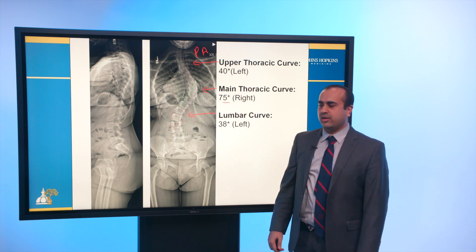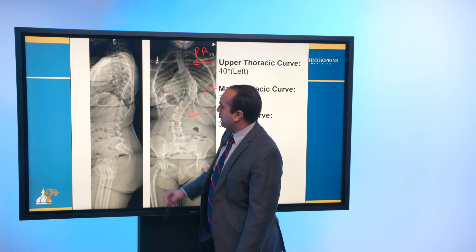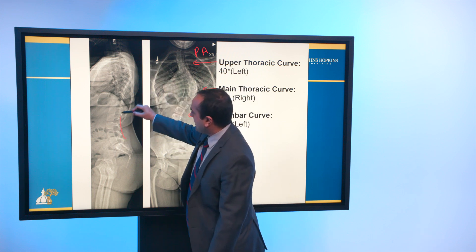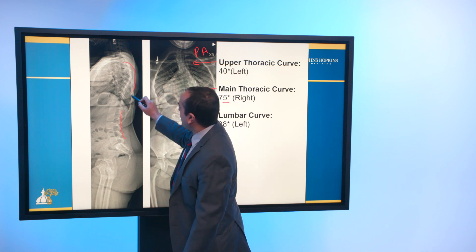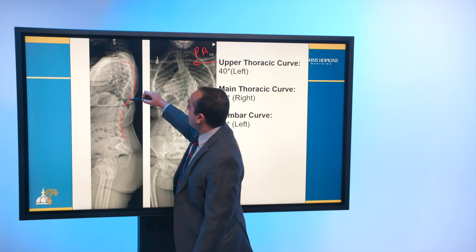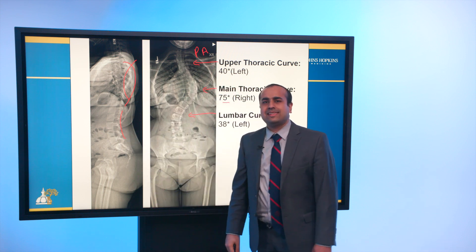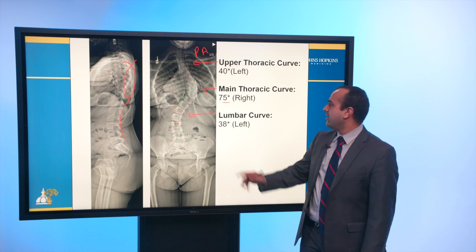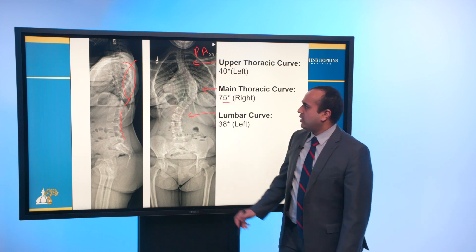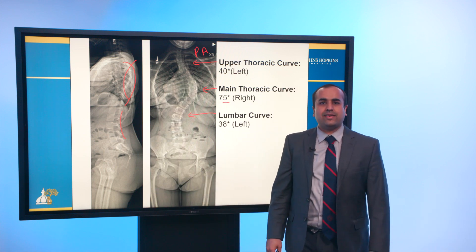On the lateral radiograph, in the lumbar spine she has nice lordosis. But in the thoracic spine, where there should be a normal kyphosis, her thoracic spine is actually lordotic. This is an interesting feature unique to scoliosis — many scoliosis patients, in addition to having a lateral deformity, also have thoracic lordosis. We'll talk more about this in a minute.